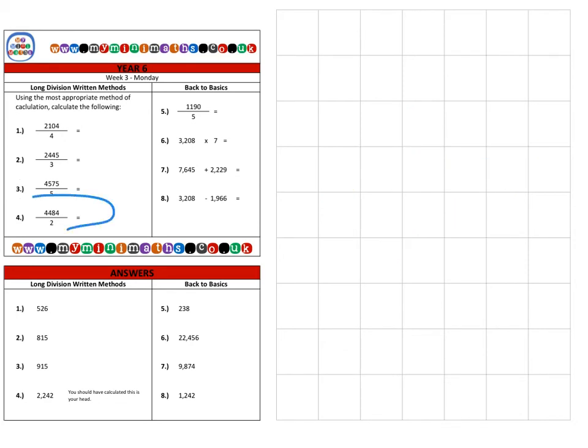Finally, we're on to today's last question, question four, which is 4484, and we're dividing that by 2. Now as we can see here, this is really a question we could be doing in our heads. One way of doing that—because we're dividing by two, we're essentially halving the number.